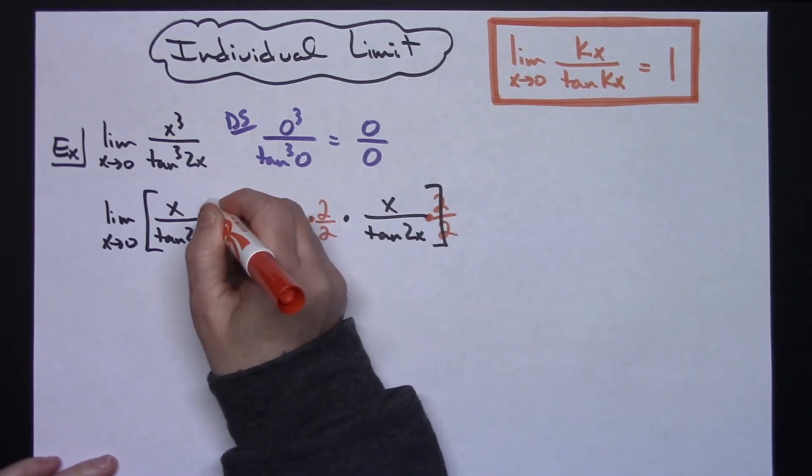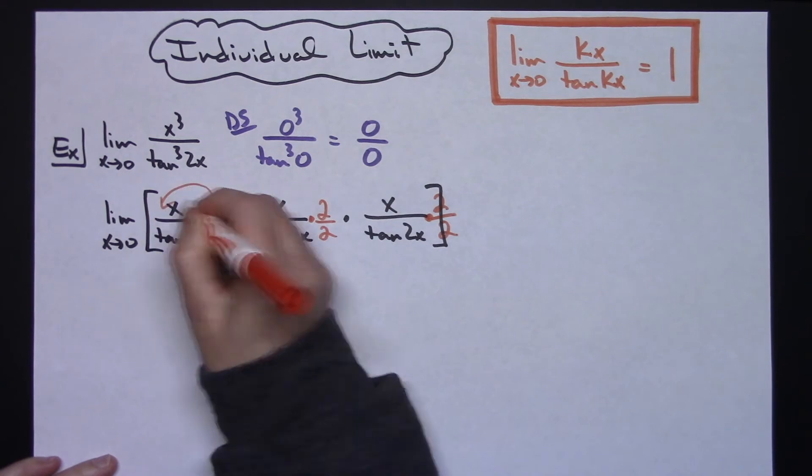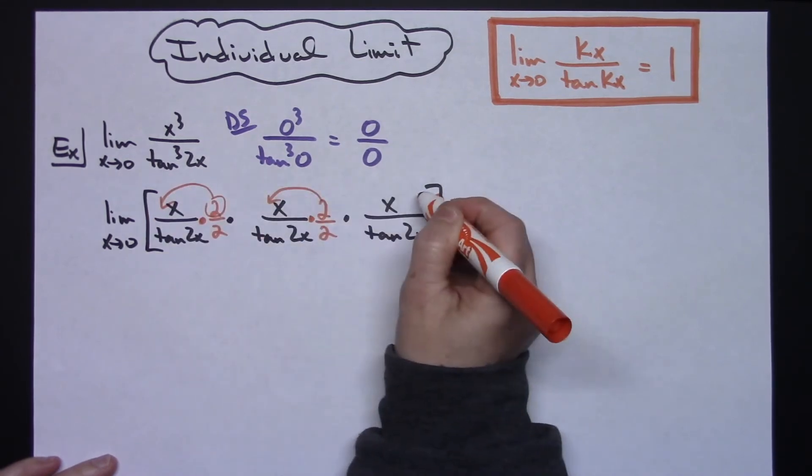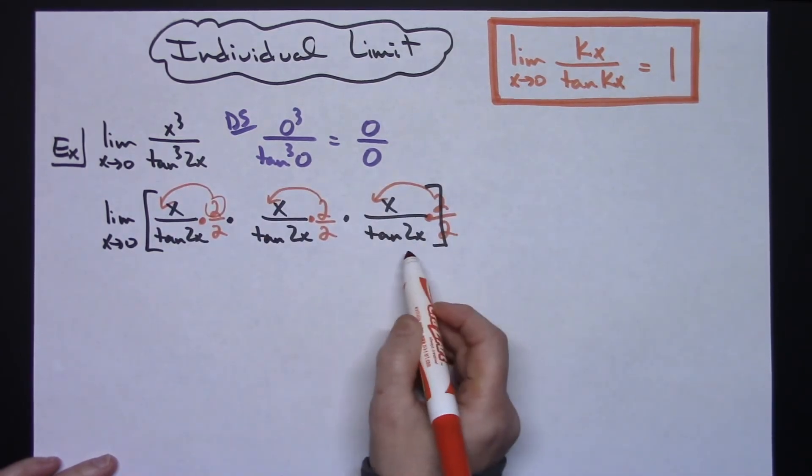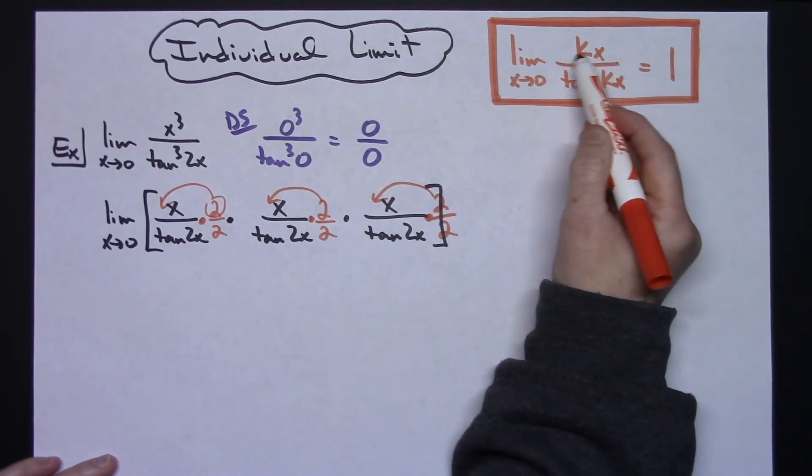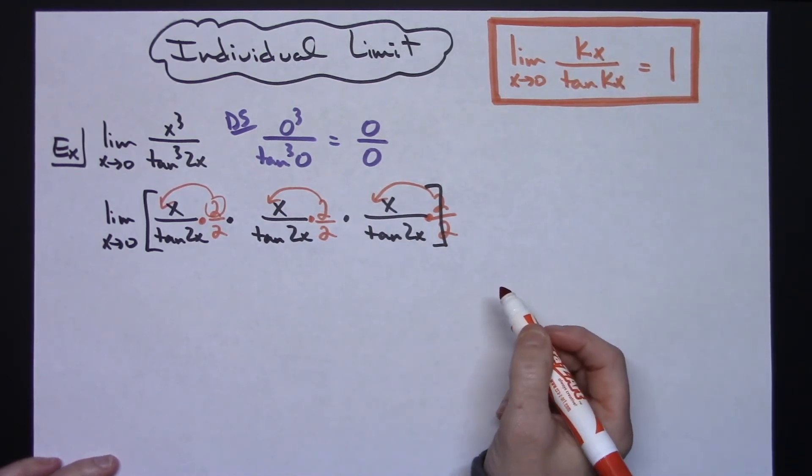Now each one of these twos on top have to stay because all I'm going to do is move them in front of the x. So I have 2x on top and 2x on the bottom. That would give me that kx, kx that I need.